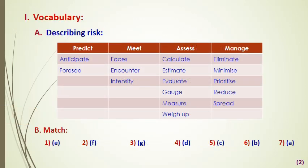We start with vocabulary used to describe risk. We have exercise number A — verbs in the box that are used when talking about risk. We have verbs like anticipate, calculate, eliminate, encounter, estimate, evaluate, face, foresee, gauge, identify, measure, minimize, reduce, spread, weigh up, and prioritize. All these are verbs that discuss risk with different degrees and different meanings.